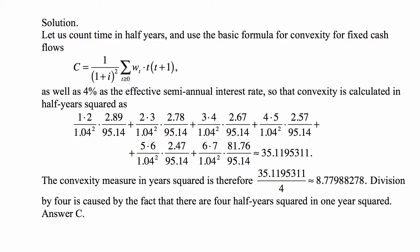We have the present values given for all cash flows, so we just plug in the numbers at an interest rate of 4%. The t(t+1) terms are: 1×2, 2×3, 3×4, 4×5, 5×6, and 6×7. This measure is in half-year squared. Since there are 2 half-years in a year, there are 4 half-year-squared per year-squared, giving us roughly 8.78 — that's answer C.